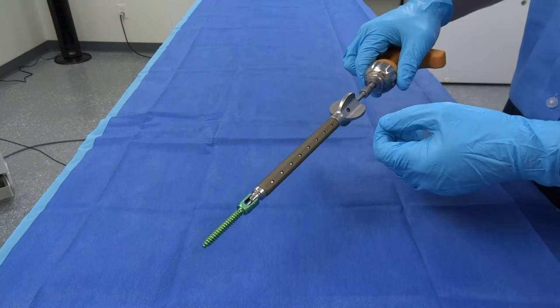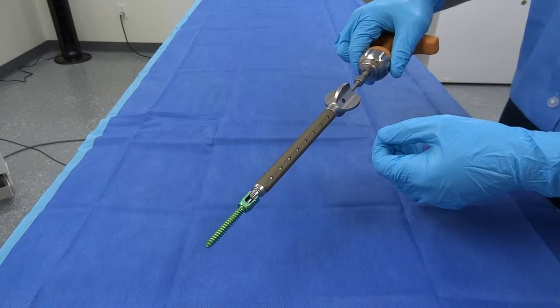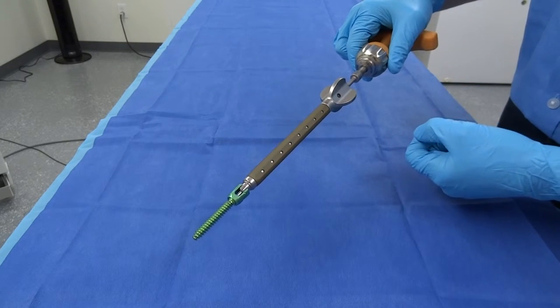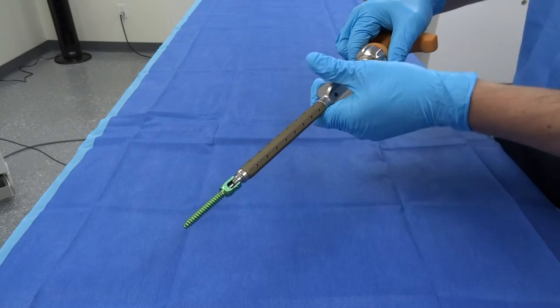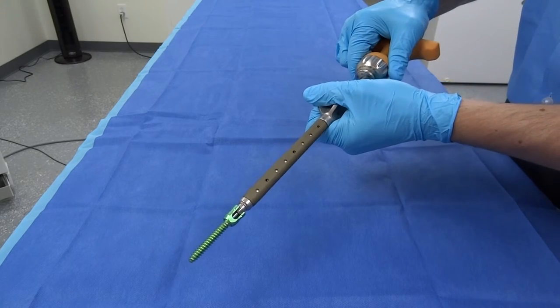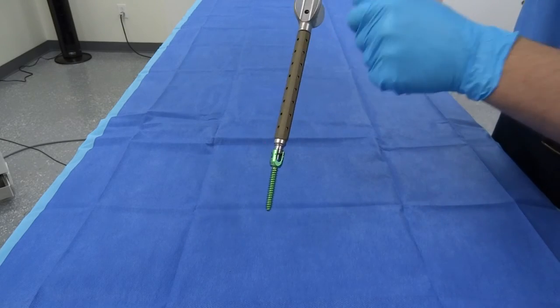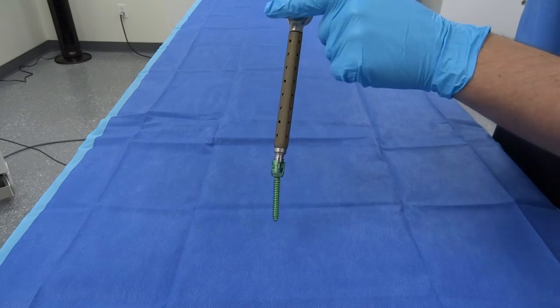To remove the screw from the screwdriver, with one hand on the quick connect handle, rotate the ball handle counterclockwise. Once the screwdriver is fully unthreaded, it will release from the screw.